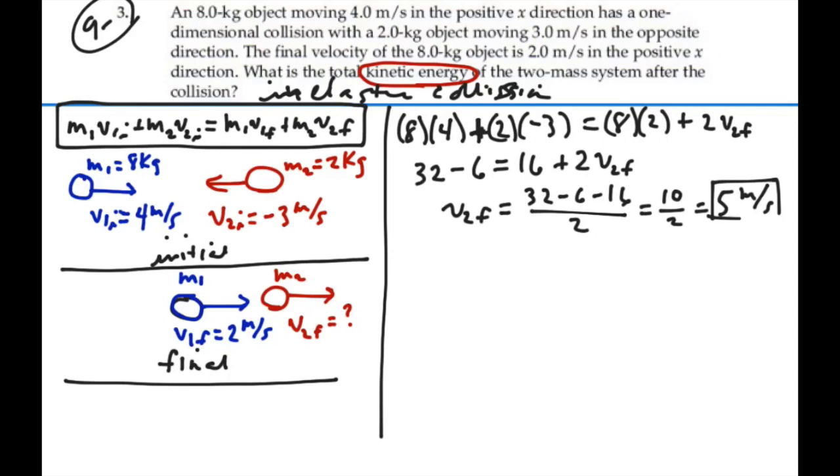So that's our final velocity, and that's nice to know, because now we can figure out our final kinetic energy for the whole system. The final kinetic energy is 1 half mass 1 V1 final squared, plus 1 half mass 2 V2 final squared.